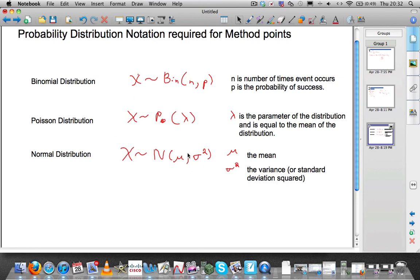So this in red is what the examiner wants to see, not the calculator notation. So just in case you mess it up and you put the wrong buttons in your calculator, at least you're getting the method points there. Good.